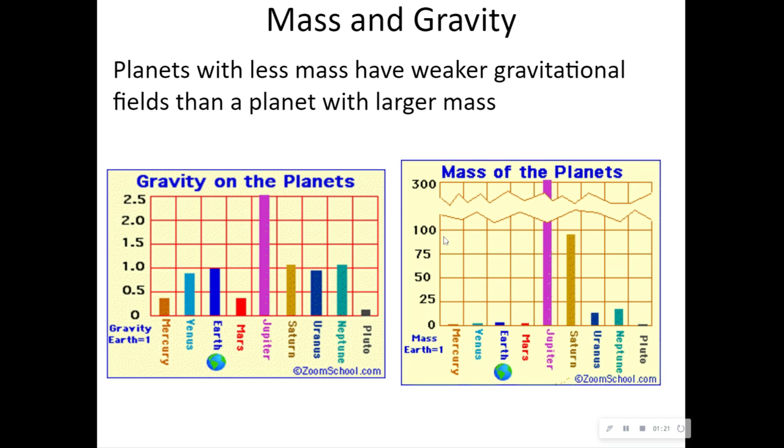So planets with less mass have a weaker gravitational field than planets with a larger mass. We call these G-forces. G-forces are based on our Earth's G-forces. So that means that Earth has one G-force, but something like Jupiter is so much larger that it has over 2.5 G-forces just standing on it. So that means it's pulling it closer to you at two and a half times more than what the Earth is.